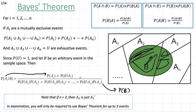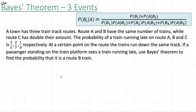If N equals 2, then A2 is just the complement, which is what we had previously. In an examination, you'll only be required to use Bayes' theorem for up to three events, so in the denominator you'll only get three terms being added. Note how the conditional probabilities are written: the first value is always in the numerator, and the conditional probability is always switched. In the denominator, the index i represents the different events — you take the intersection with the first, second, and third events, adding them all together to give you probability of A.